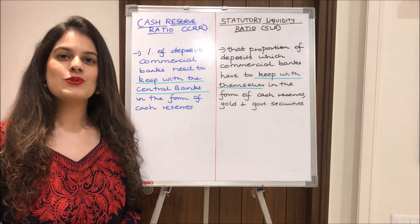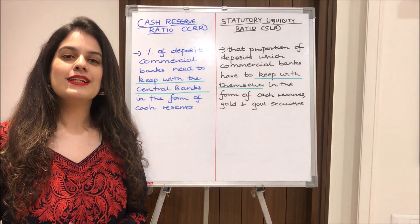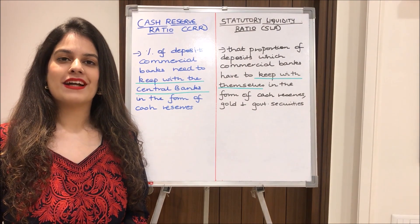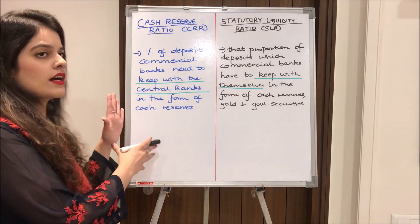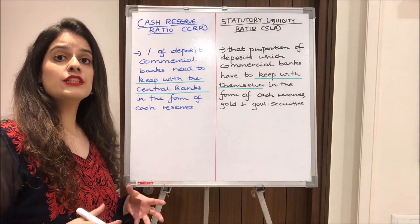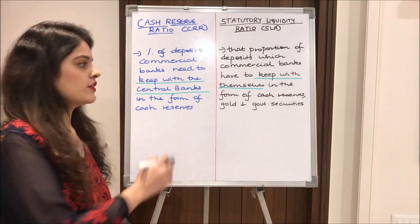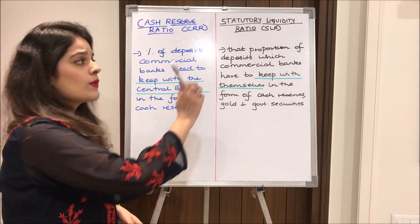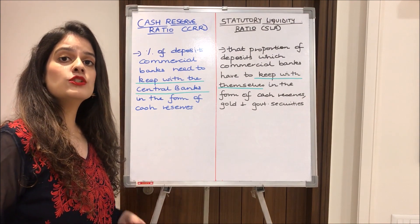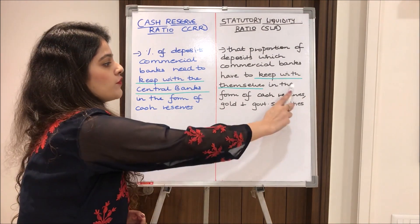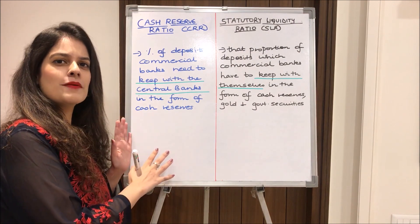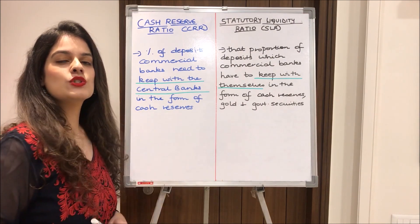Moving next to cash reserve ratio and statutory liquidity ratio, commonly known as CRR and SLR, found under the money and banking chapter. CRR is the percentage of deposits which commercial banks need to keep with the central bank in the form of cash reserves, whereas SLR is the proportion of deposits which commercial banks need to keep with themselves in the form of cash reserves, gold, and government securities. CRR is around 3 to 5 percent, while SLR is in the range of 17 to 18 percent.